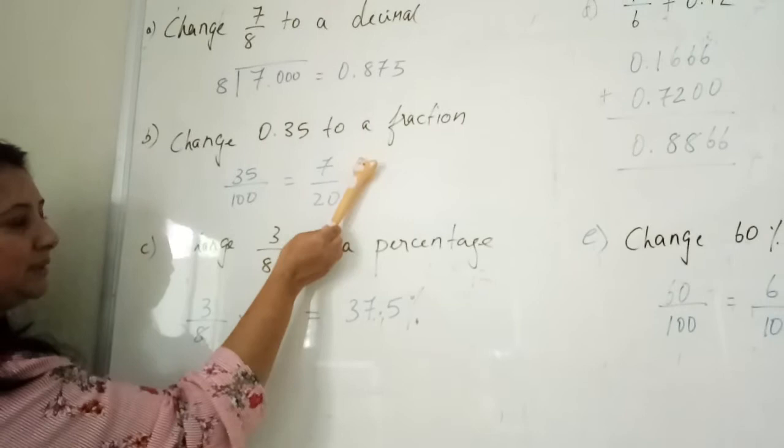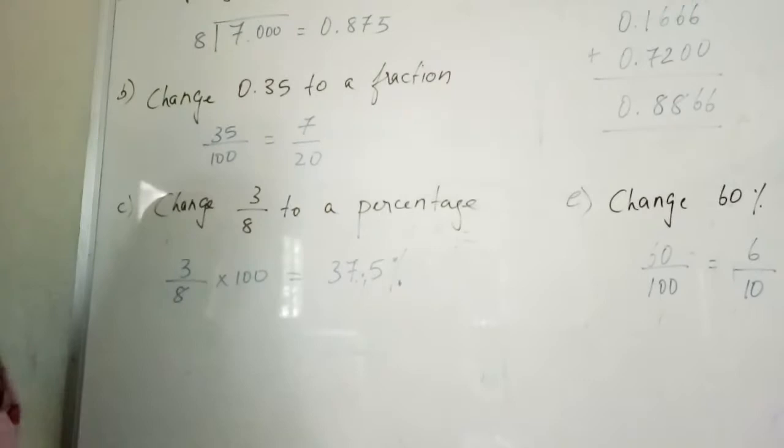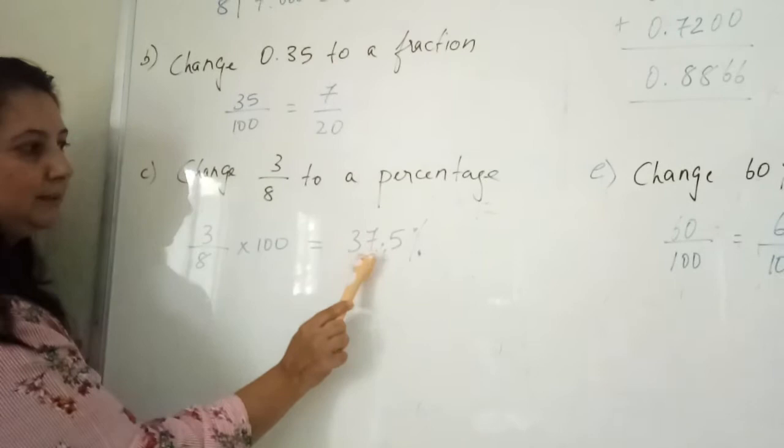Then, to change a fraction to a percentage, you multiply by 100. So you get 37.5%. Remember, when you change to a percentage, you have to add the percentage sign.